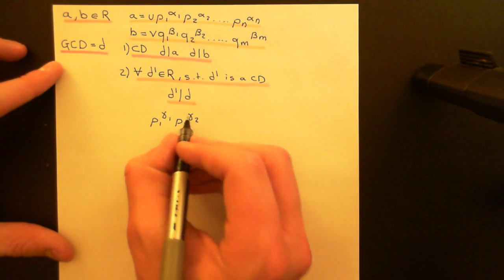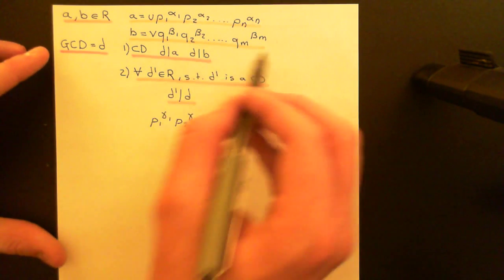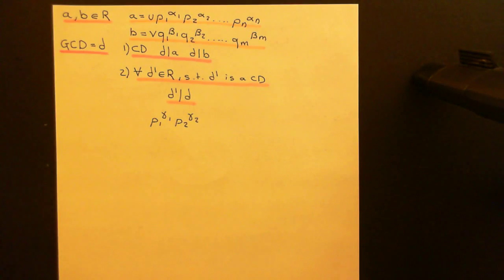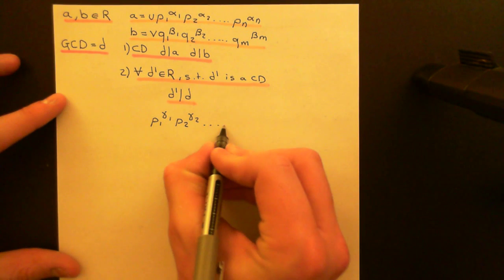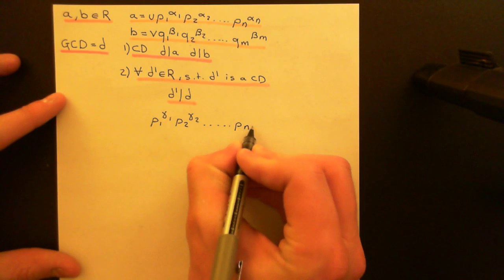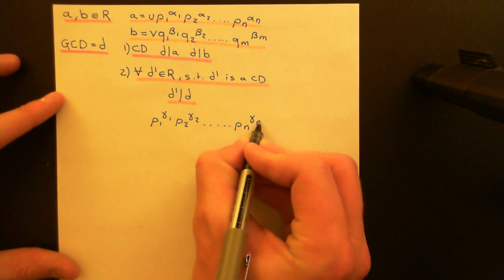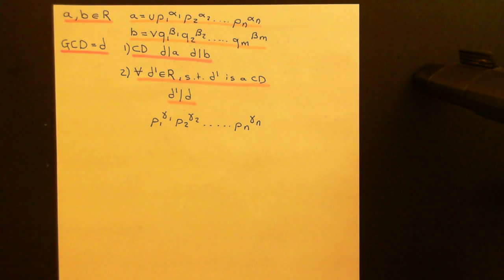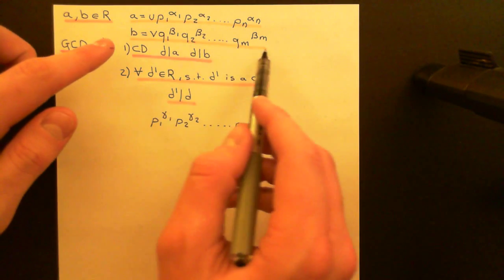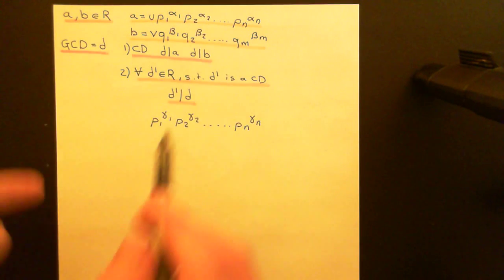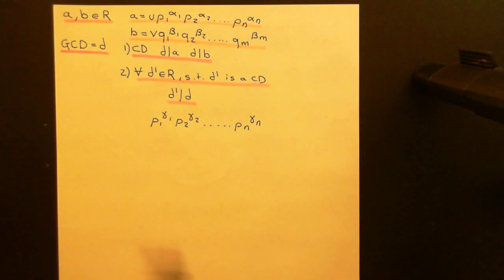You look at what the greatest power of P1 common to both is — call that P1 to the power of gamma 1. Then go to P2 and ask the same: are there any powers of P2 or associates of P2 in the factorization of B? Take the highest power common to both, call that P2 to the power of gamma 2. Of course, gamma 2 might be 0 if there's no P2 or associate of P2 in B. Continue on like this until you go along to the nth prime, looking for the highest power common to both.